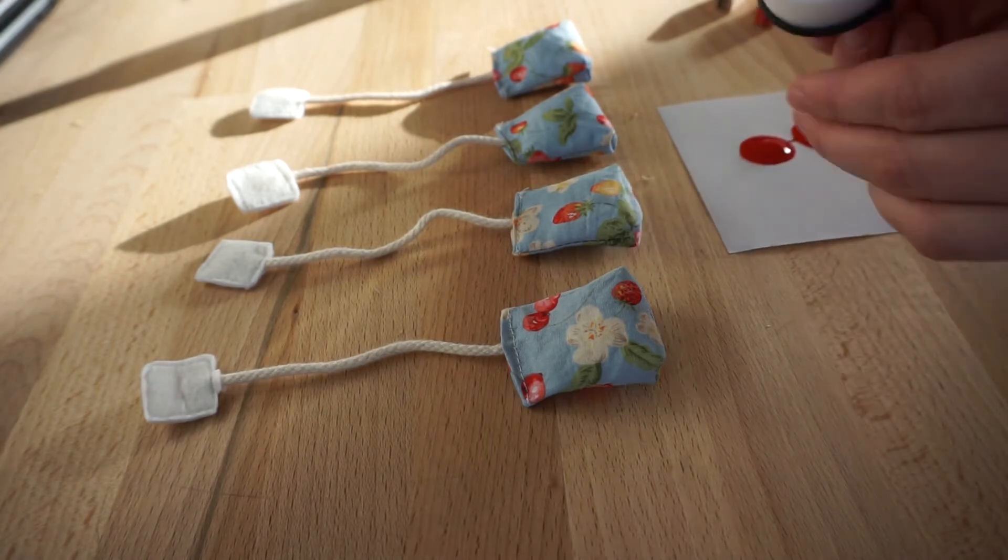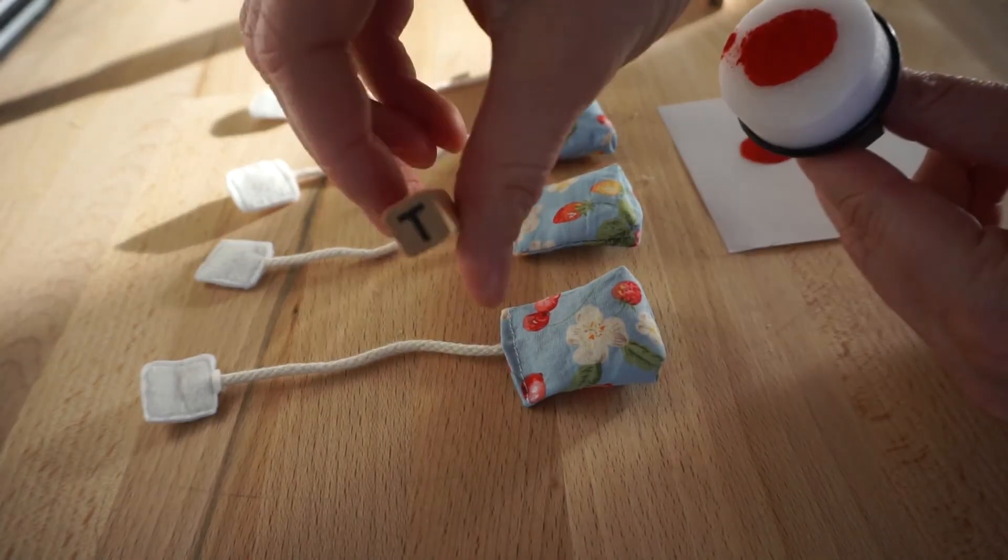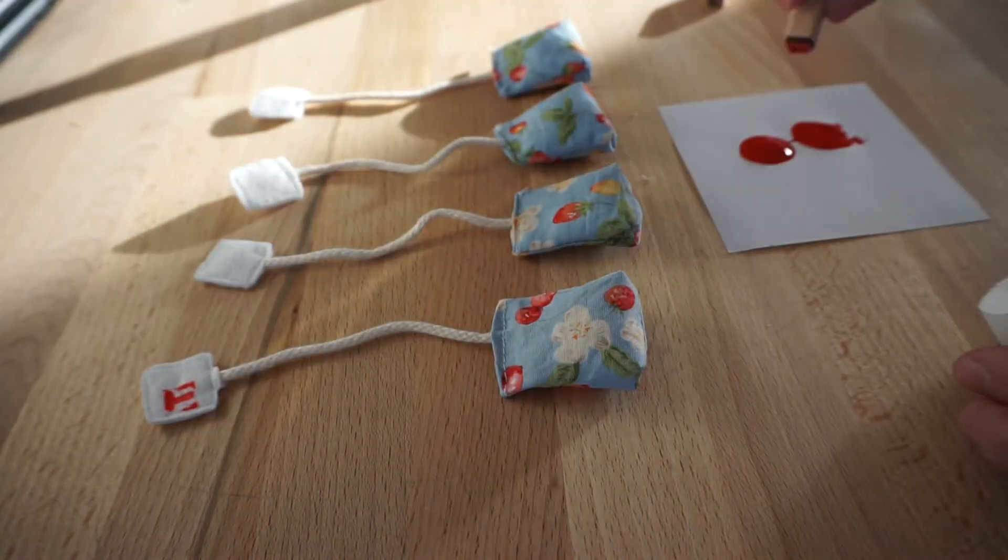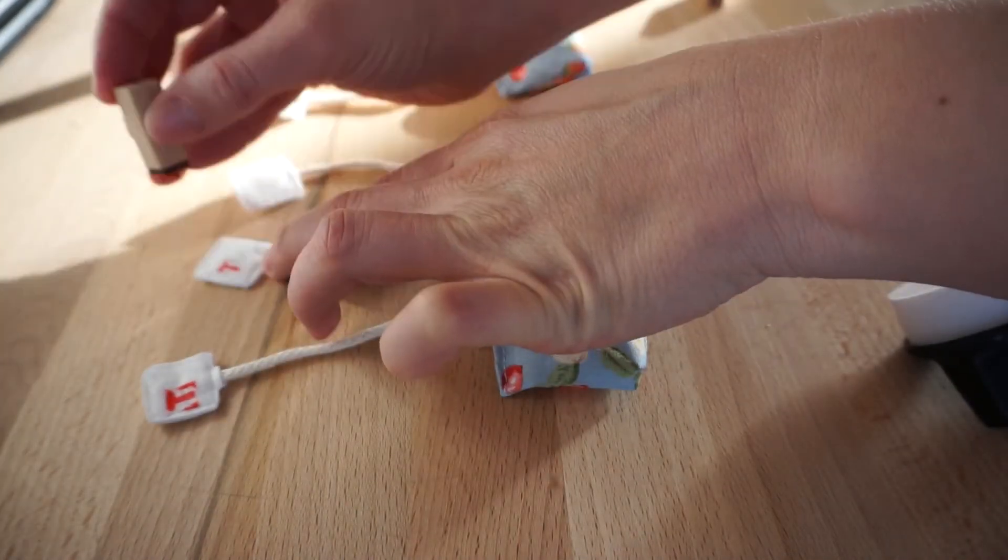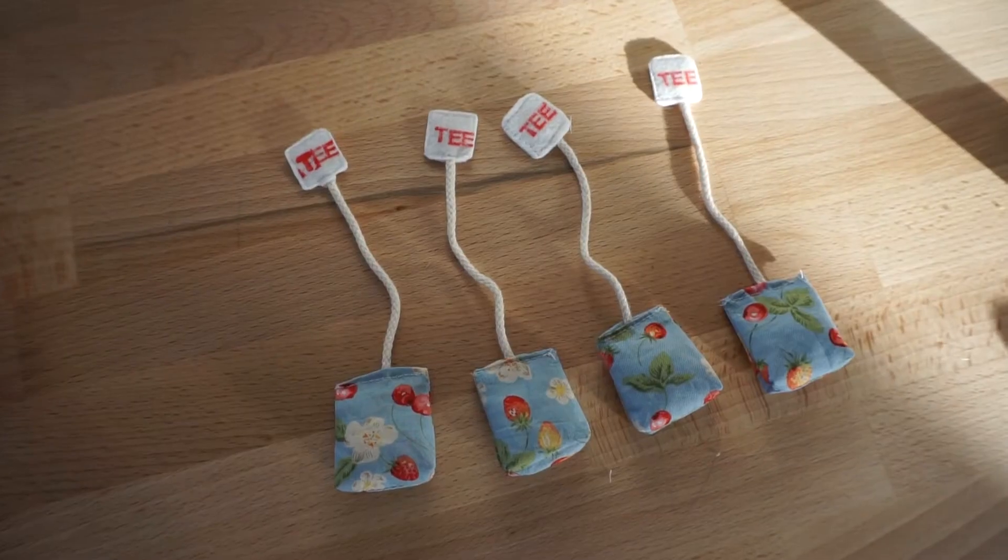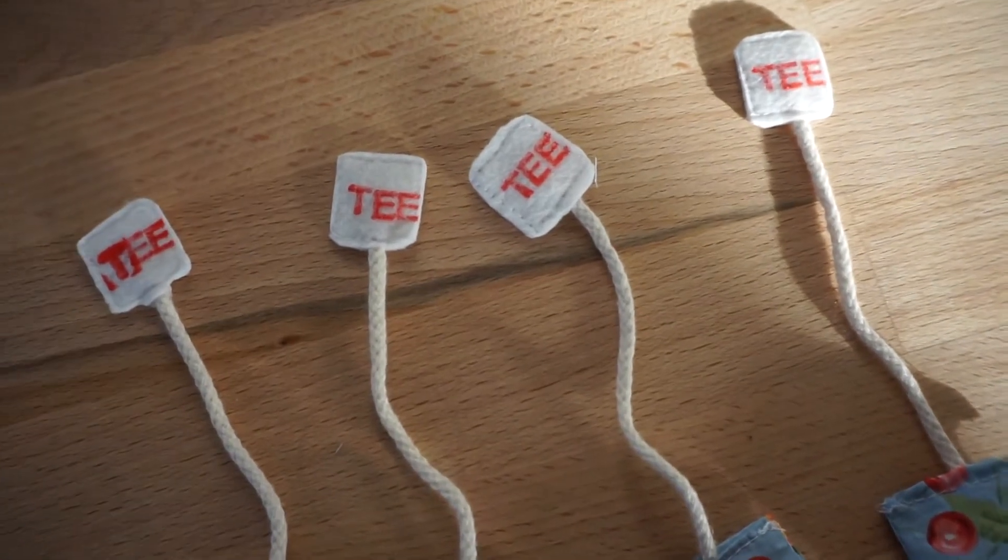Der nächste Schritt ist vollkommen optional. Ich habe ein bisschen Stofffarbe auf einen Schwamm gegeben und mit Stempeln das Wort Tee auf das Filzquadrat gestempelt. Jetzt steht dem Teekränzchen in eurer Spielküche nichts mehr im Weg.